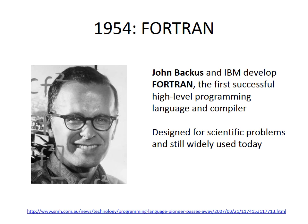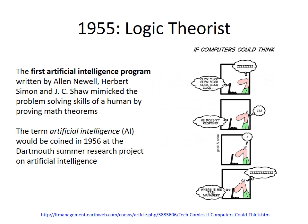High-level languages are what most programmers use today to write software. The first program that demonstrated artificial intelligence by mimicking the problem-solving skills of a human was written in 1955. It wasn't until the following year that the term artificial intelligence would be coined. AI is a branch of computer science that forces us to examine what we define as intelligence — is a computer that mimics a human's problem-solving skills considered intelligent, or is there something more to it?